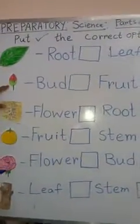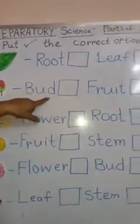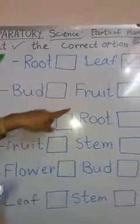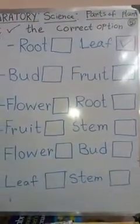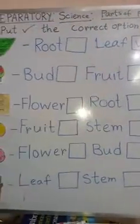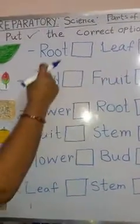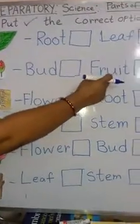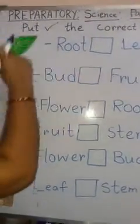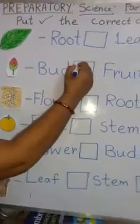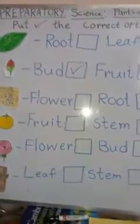Number two: b-u-d bud, f-r-u-i-t fruit. Which one is correct, bud or fruit? Yes, this is a bud picture. So the correct answer here is bud.